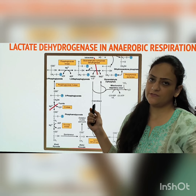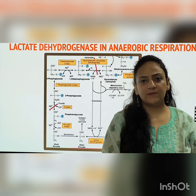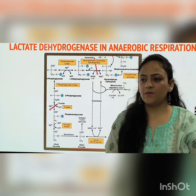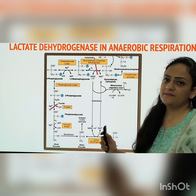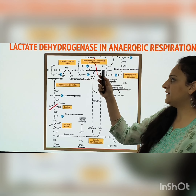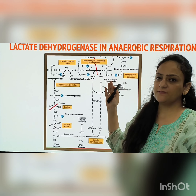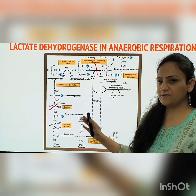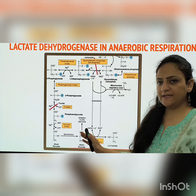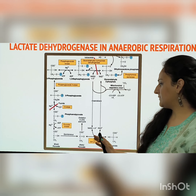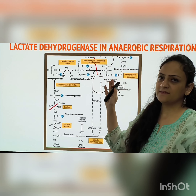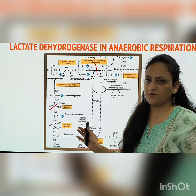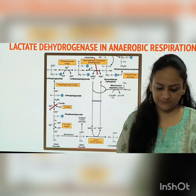Phosphoenolpyruvate is converted to pyruvate with the help of enzyme pyruvate kinase, and ATP is formed. This is the role of lactate dehydrogenase in anaerobic respiration: when oxygen is unavailable or mitochondria is absent, pyruvate is converted to lactate. In this process, the NADH formed when glyceraldehyde 3-phosphate was converted to 1,3-bisphosphoglycerate is utilized by lactate dehydrogenase, regenerating NAD⁺ so that the cycle of glycolysis can continue.